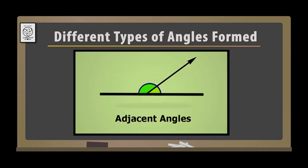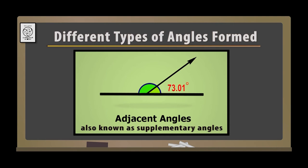Next we have adjacent angles. This angle and this angle are adjacent angles. Incidentally, these two angles are also known as supplementary angles, because their sum — that is, 73.01 degrees and 106.99 degrees — if you add them up, it comes out to be 180 degrees. So when the sum of two angles becomes 180 degrees, they form supplementary angles and they are also forming a linear pair.